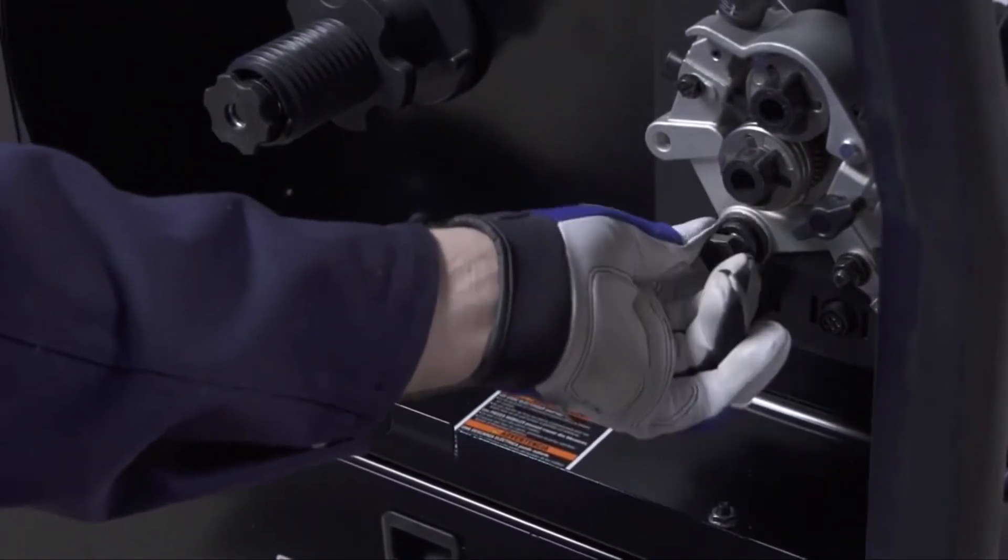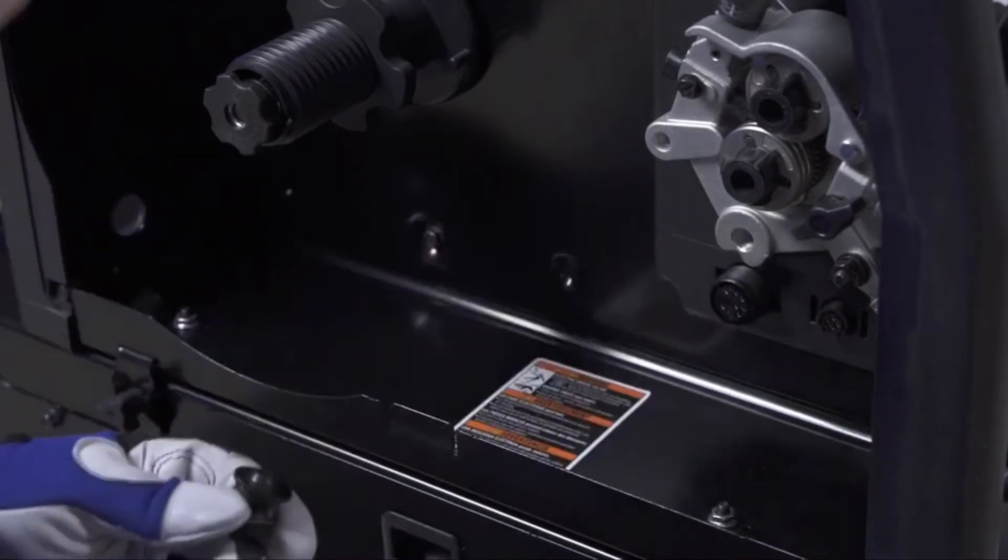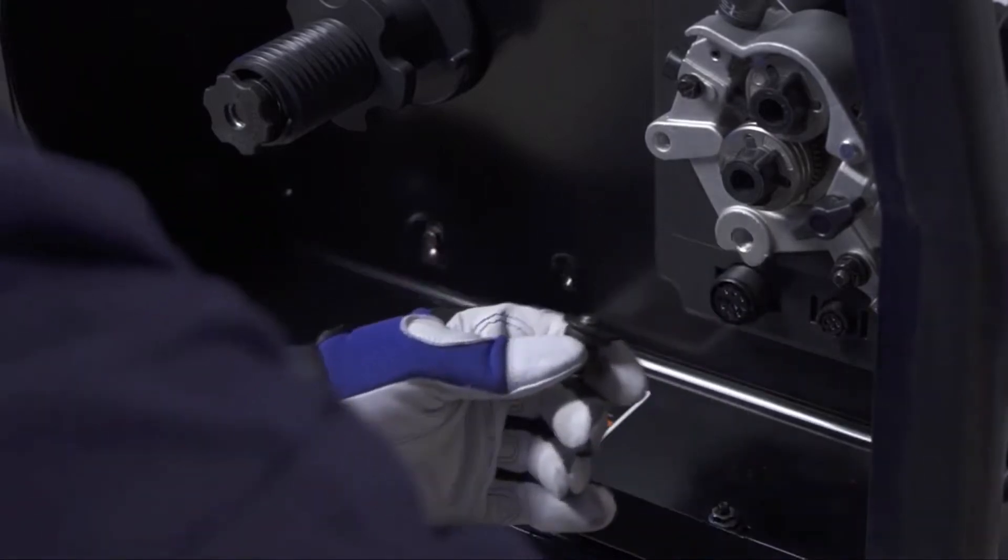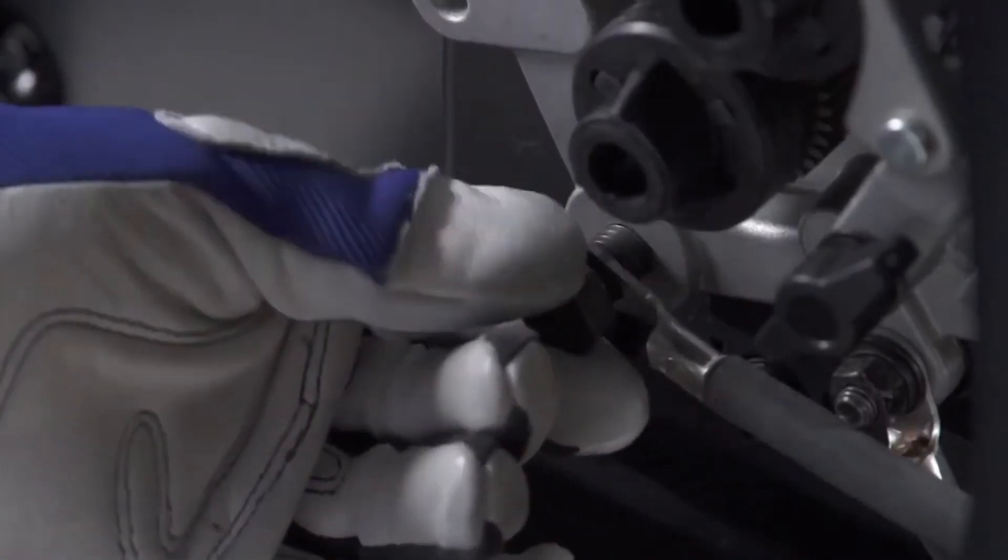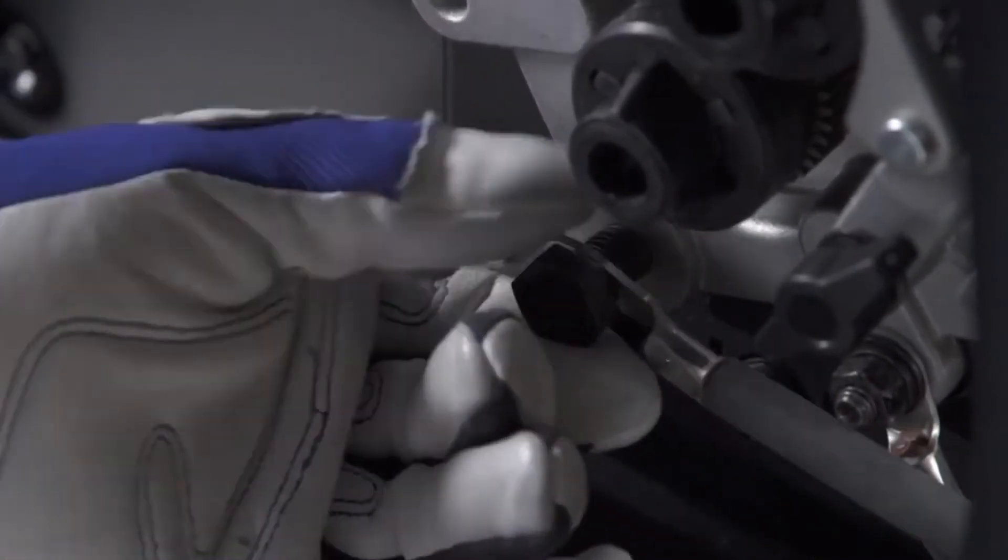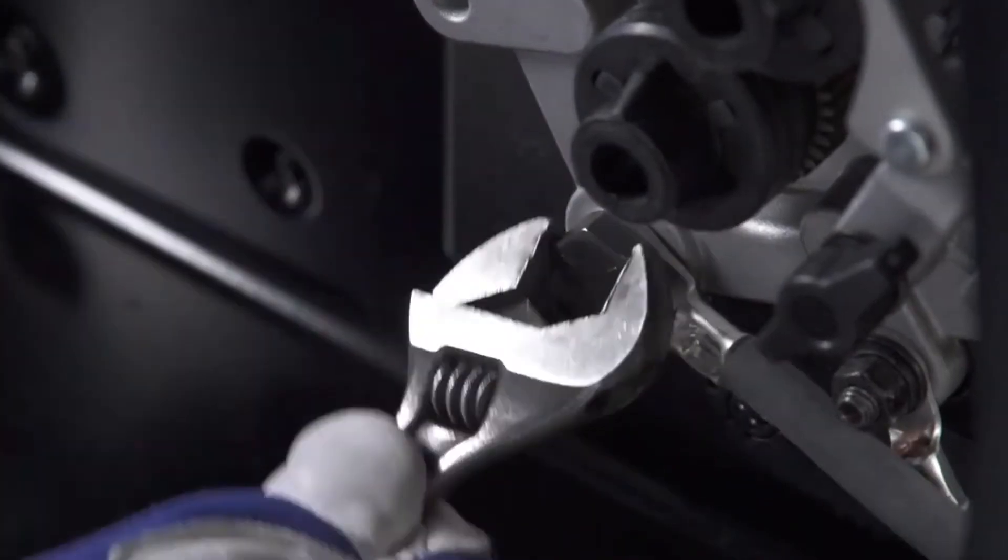Then take the lugged end of the spool gun cable and insert it through the opening in the front of the machine and connect to the wire drive assembly with the bolt that was previously removed. Tighten with a wrench.